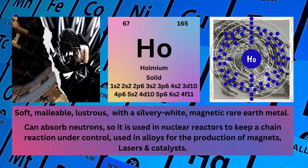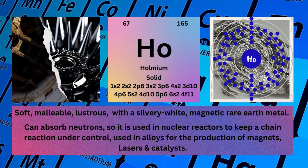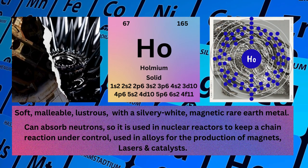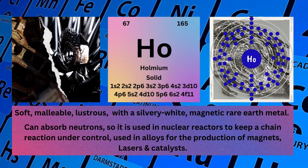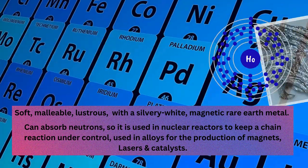Holmium can absorb neutrons, so it is used in nuclear reactors to keep a chain reaction under control; also used in alloys for the production of magnets, lasers and catalysts.